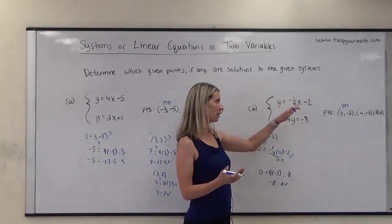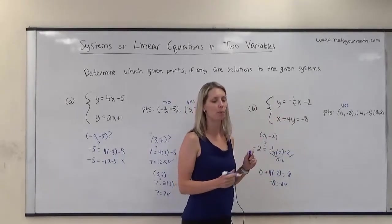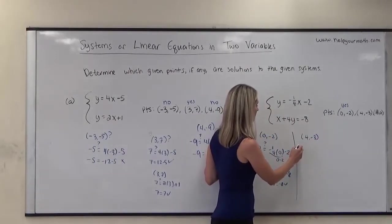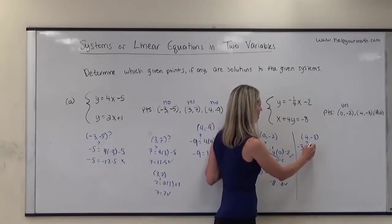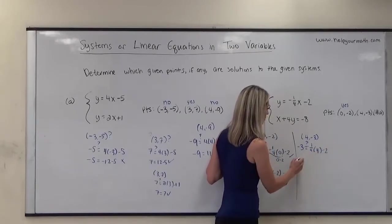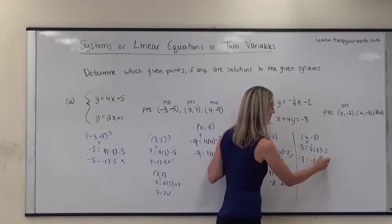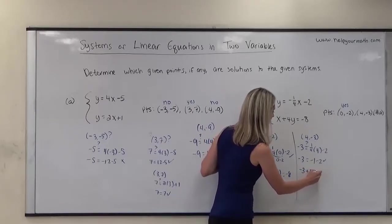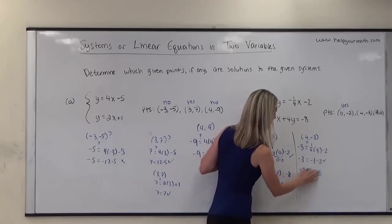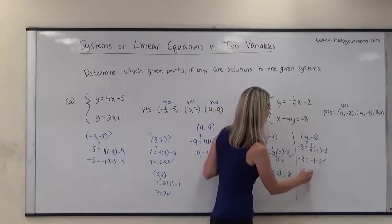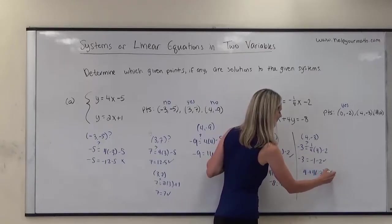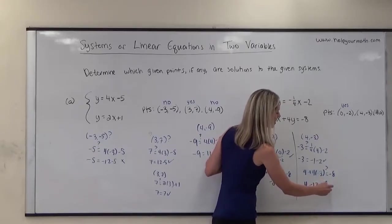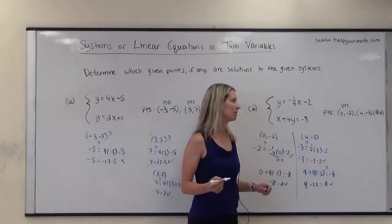We're not sure if this is the only solution or if there are infinitely many, so we need to check the other points. Let's check 4, negative 3. Does negative 3 equal negative one-fourth times 4 minus 2? That gives us negative 1 minus 2, which equals negative 3 — yes. Now the second equation: 4 plus 4 times negative 3 equals 4 minus 12, which does equal negative 8. This tells us the system has infinitely many solutions.